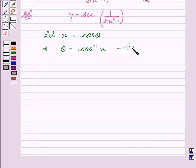This is our first equation. Now this implies y equals secant inverse 1 over cos 2 theta, using the identity 2 cos squared theta minus 1.